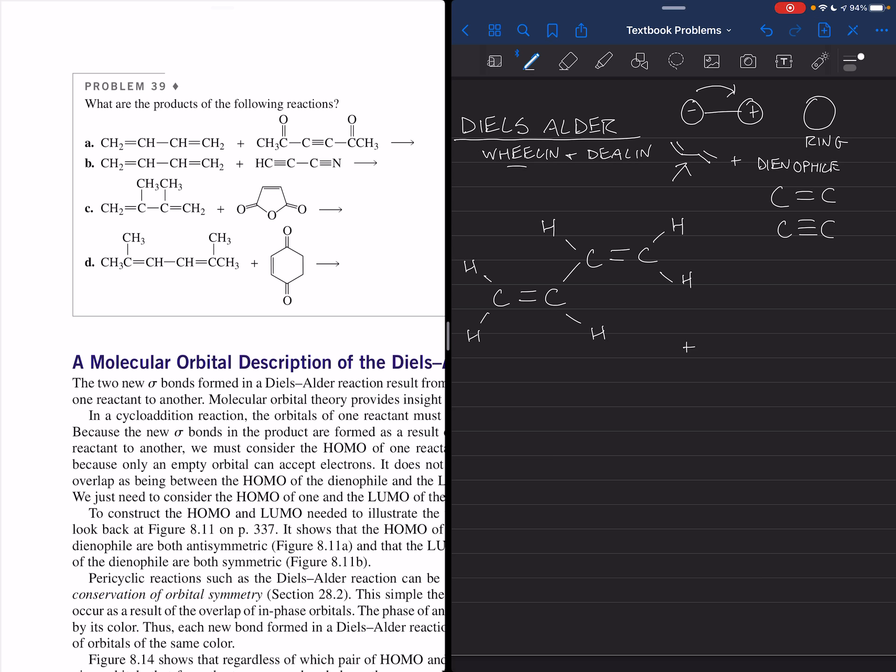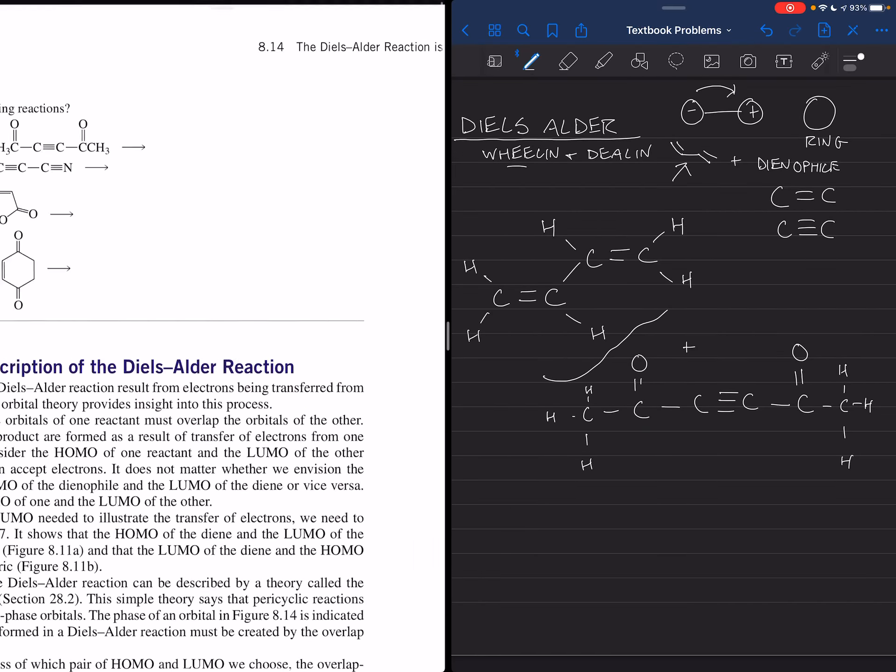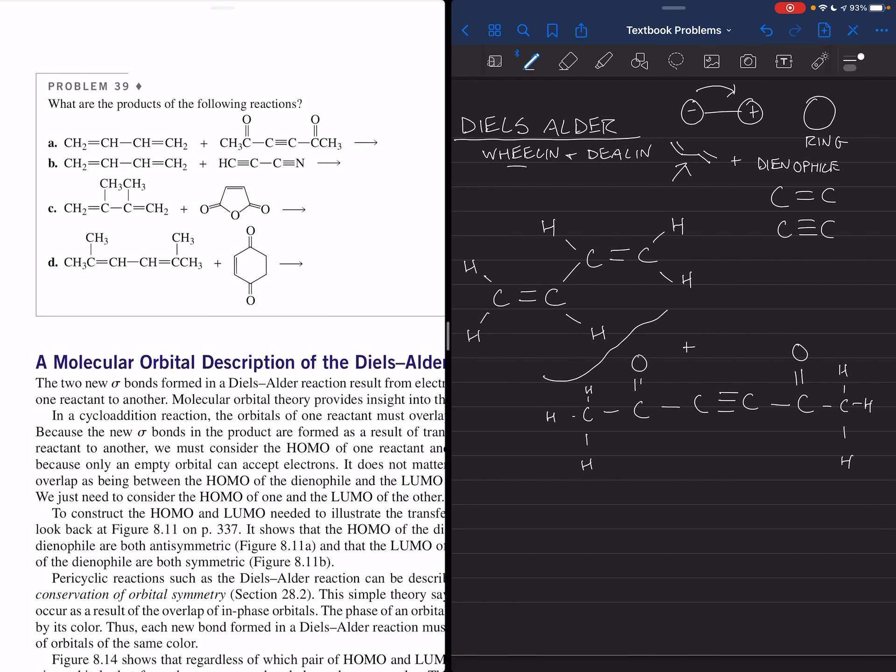And what are we adding it to? We're adding this. Let's see if we can at least draw this. We have a triple bond in the center. We're already starting this off on a complicated foot here. This looks crazy complicated.